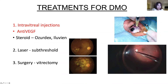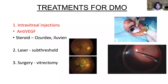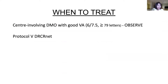Vitrectomy is done in relatively few patients who have traction — a taut posterior hyaloid — and can be very successful in relieving macular edema in those situations. There's been some interest in trialling surgery even without taut posterior hyaloid as a potential cure for macular edema, but we don't have answers from that yet. Treatment is really about intravitreals and particularly anti-VEGF.